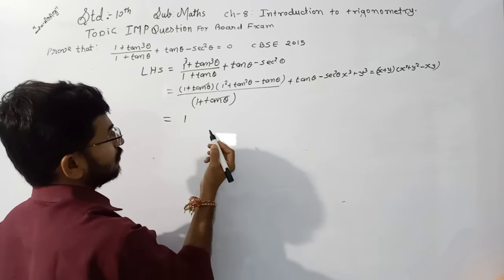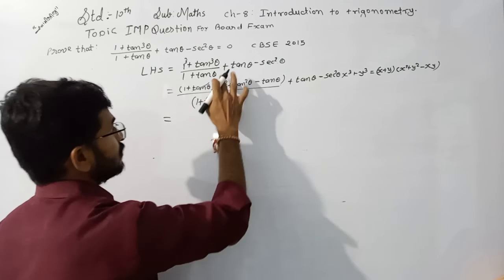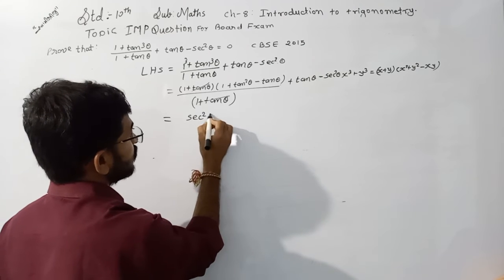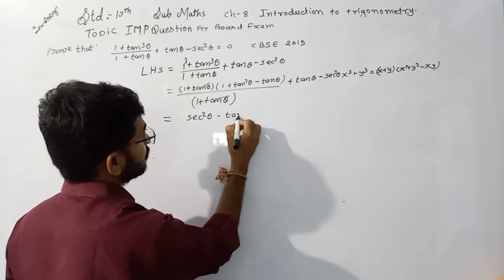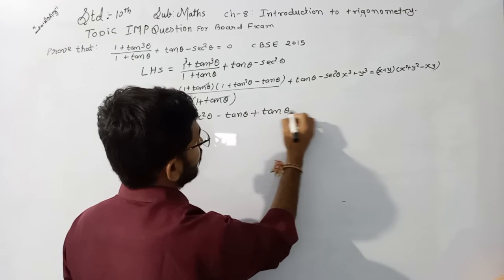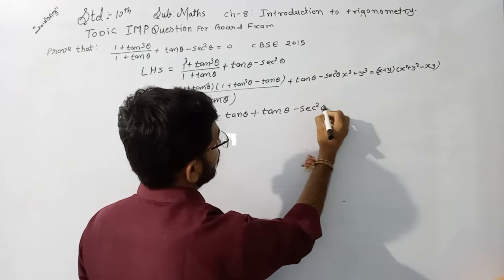So 1 square value is 1. We get: 1 plus tan square theta equals sec square theta minus tan theta, and here plus tan theta minus sec square theta.